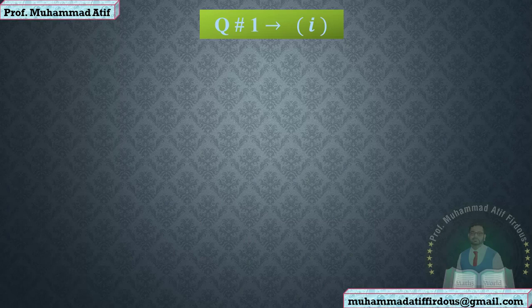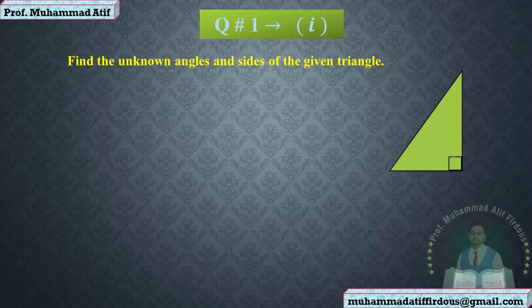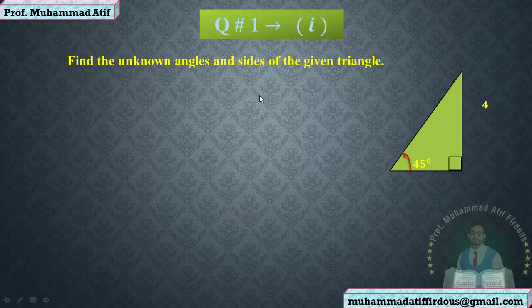We start with question number one. The first part is: we have to find the unknown angles and sides of the given triangle. A diagram has been given. This box is the right angle — the right angle has been given. One angle is 90 degrees, one side is four, and we need to find all the remaining three things.